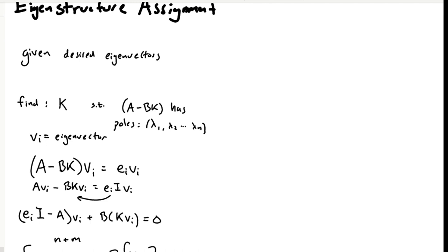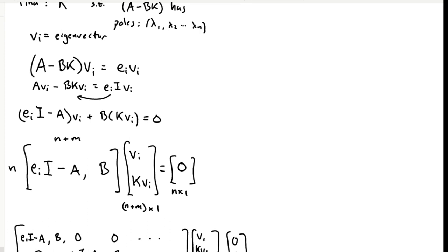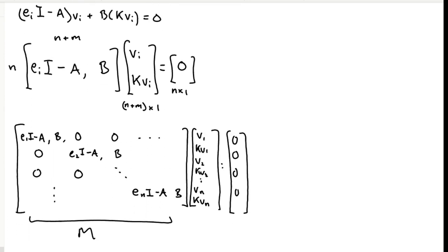Rearranging this into the following form, we can express this as a matrix, which would look like this. In this matrix, we are just expressing the fact that the controlled system, when it's multiplied by a given eigenvector, should scale that eigenvector by the eigenvalue.